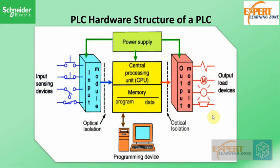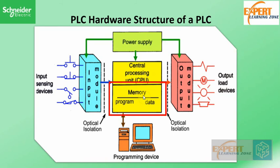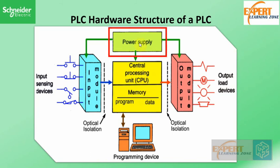Now let's look at the detailed structure of the PLC hardware. First, we have the Central Processing Unit, which contains a microprocessor. Then the memory unit, which is where the program is stored that is used to control actions. Next, we have the power supply, which is needed to convert AC mains to DC low voltage.